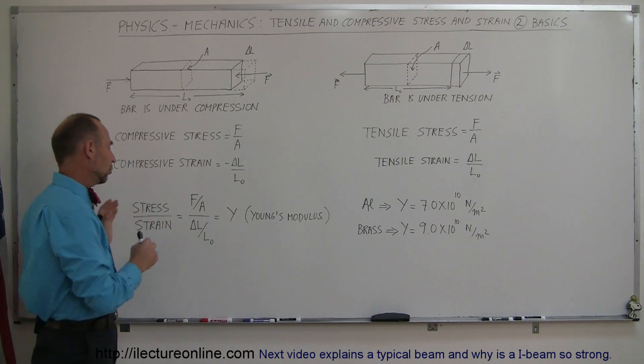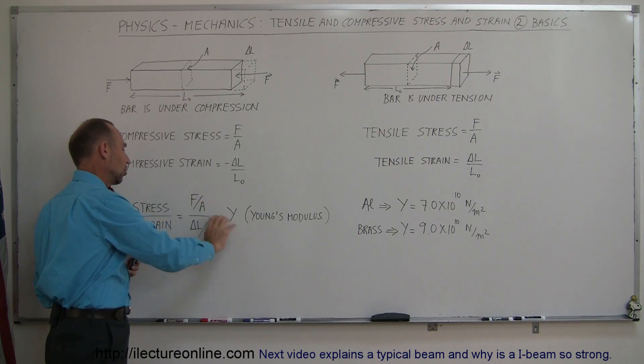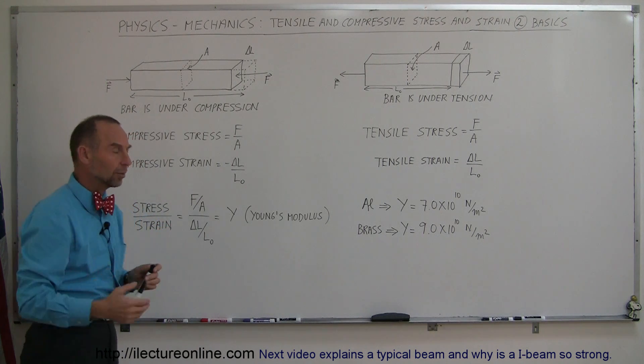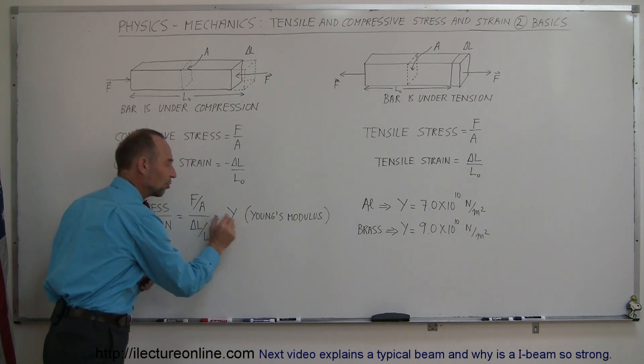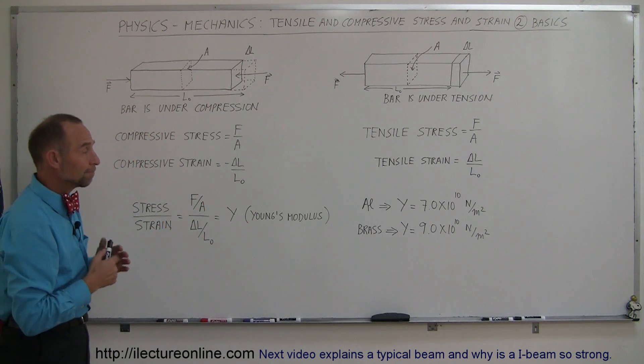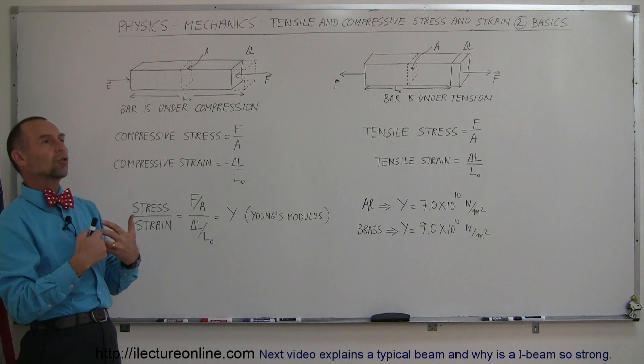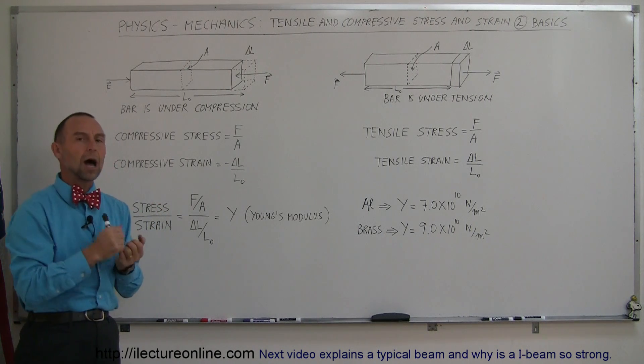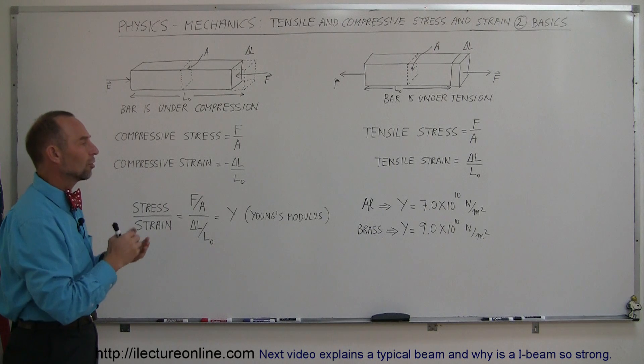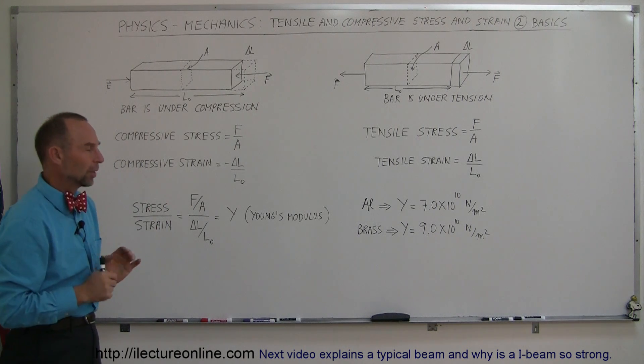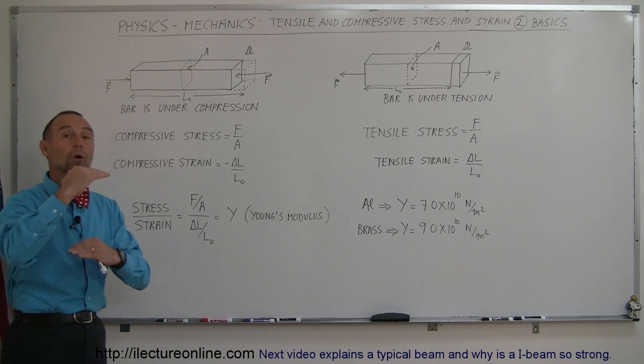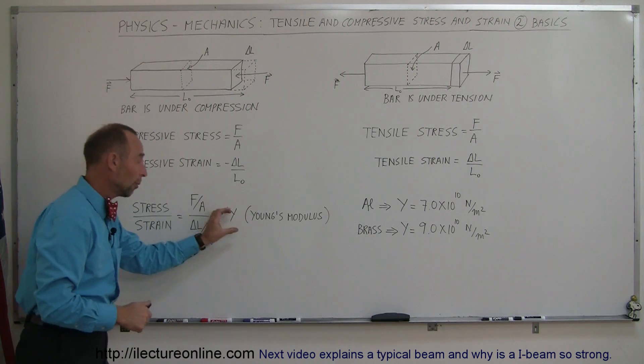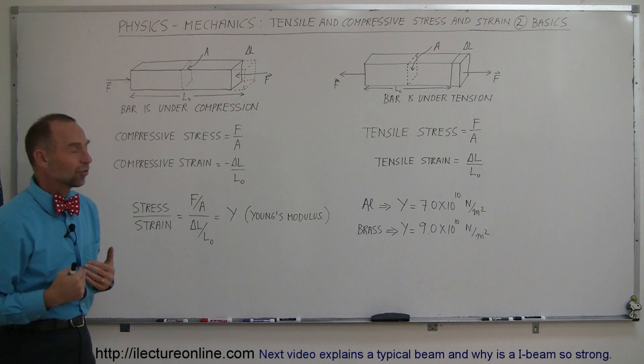To illustrate that ratio, we call it Young's modulus, and we'll talk more about that in a later video. Understand that the size of this ratio implies the strength of the material. How easily does it resist deformation? The bigger the number, the bigger the ratio, the more it resists deformation. The smaller the number, the less it resists deformation.